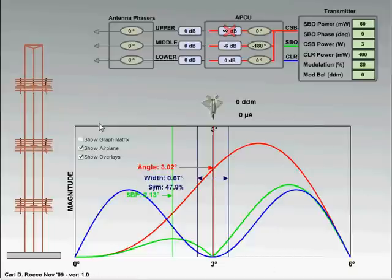Right here I have a Cartesian coordinate graph that's showing the composite signals for the CSB, SBO, and clearance.